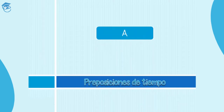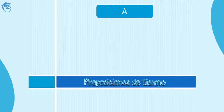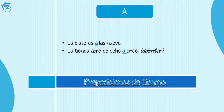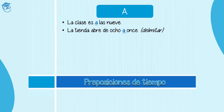Una de las más comunes es a — one of the most common prepositions of time is a. For example, La clase es a las nueve — a for the time, for the hours, at. The class is at nine. La tienda abre de ocho a once — to delimitate — the shop opens from eight to eleven.